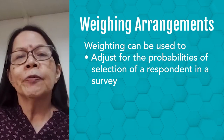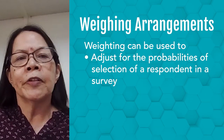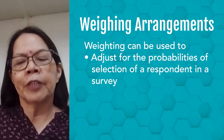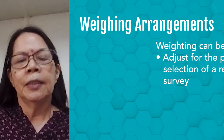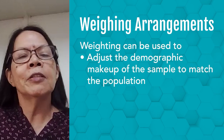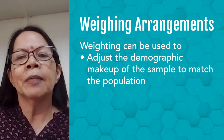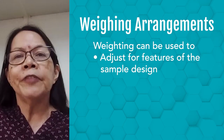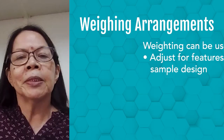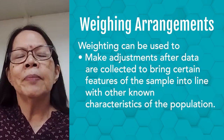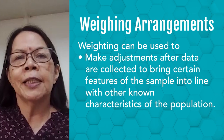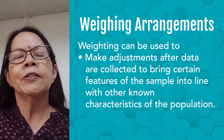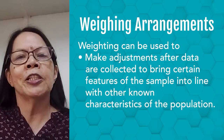Weighting does not involve changes to individual answers provided by respondents, but since different groups in the population may have different opinions on issues, adjusting their proportion of the sample to match the population can impact overall results and typically produces more accurate results. Weighting can be used to adjust for the probabilities of selection of respondents, to adjust the demographic makeup of the sample to match the population, to adjust for features of the sample design, and to bring certain features of the sample into line with other known characteristics of the population.